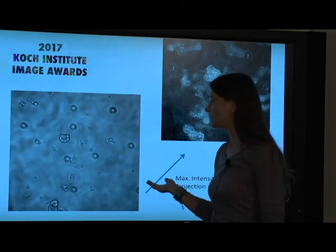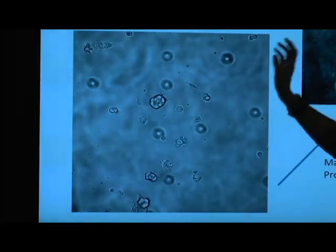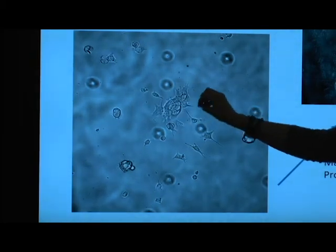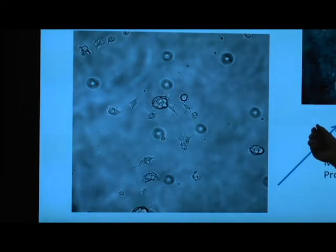Sometimes, especially at the end of the movie, we can see that these bullish cells actually start to spread out and then become spindle-like on these kinds of substrates.